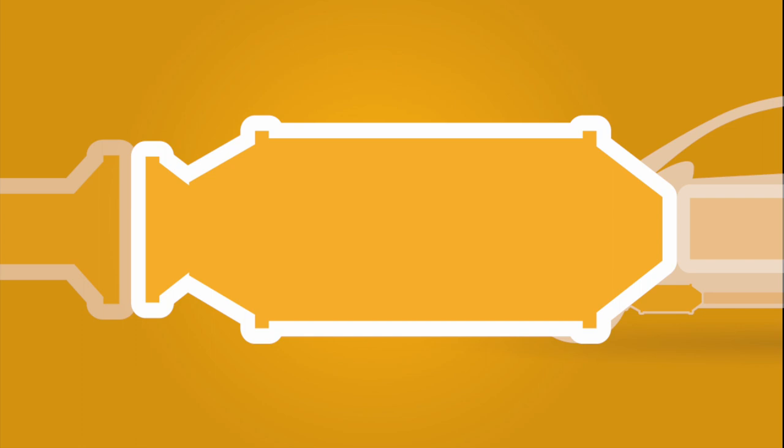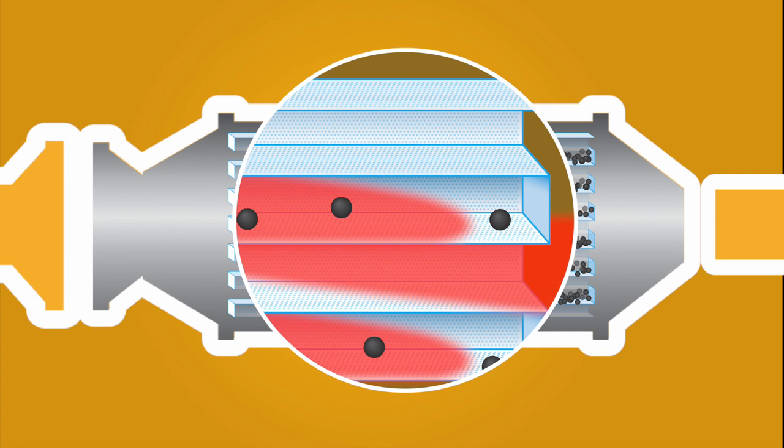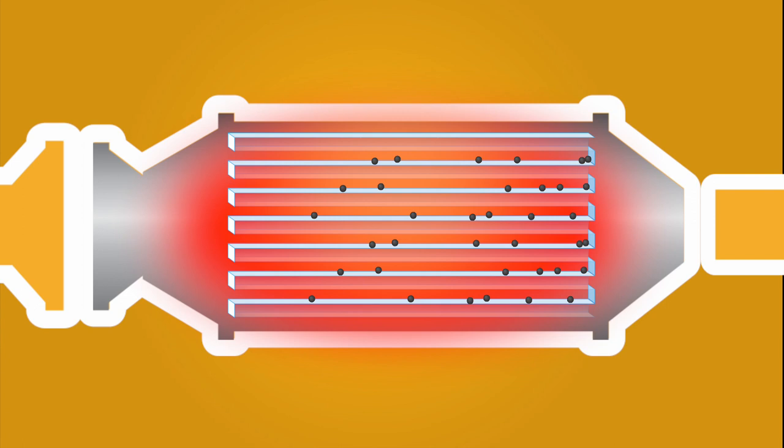How it works: A diesel particulate filter is fitted as closely as possible to the engine in the exhaust system. When the exhaust gases flow through the diesel particulate filter, the soot particles are trapped, while the other elements of the exhaust gas are emitted through the porous walls of the filter. The soot particles collect in the filter, and the collected particles must be burnt to keep the filter clean. This combustion process is also known as regeneration.